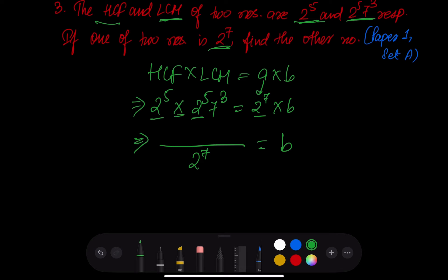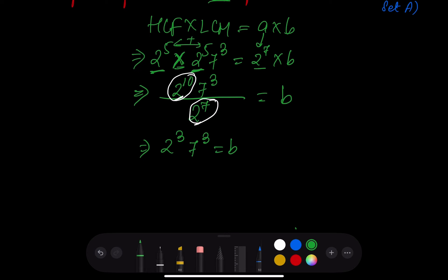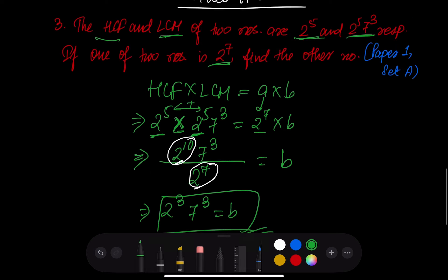According to the exponential rule, when the base is the same and we multiply, the powers add. So 2 to the power 5 multiplied by 2 to the power 5 gives 2 to the power 10, into 7 to the power 3. Then dividing: 2 to the power 10 divided by 2 to the power 7 gives 2 to the power 3. So the answer is 2 to the power 3 into 7 to the power 3.